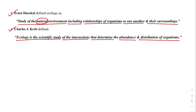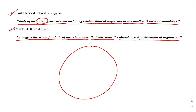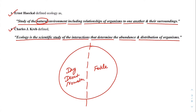Let's look at the definition given by Charles J. Krepp in detail. Say we have an island divided into two parts: one area is fertile with water abundance, and the other area is a dry desert with no water. Now we have three organisms — organism one, two, and three.